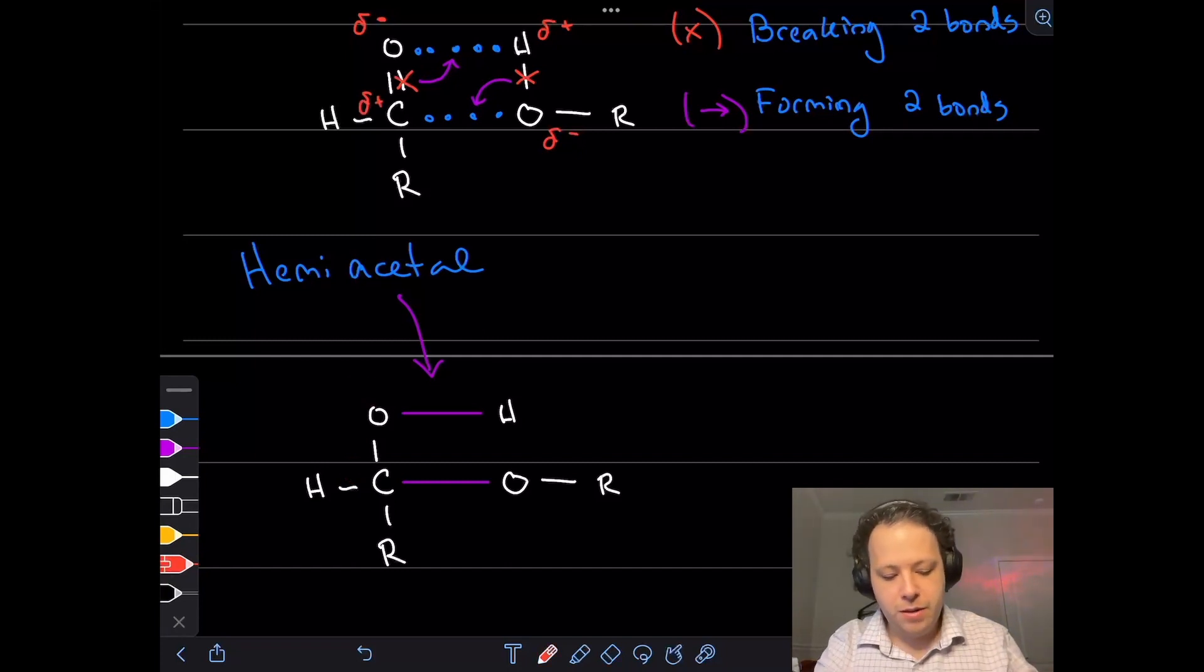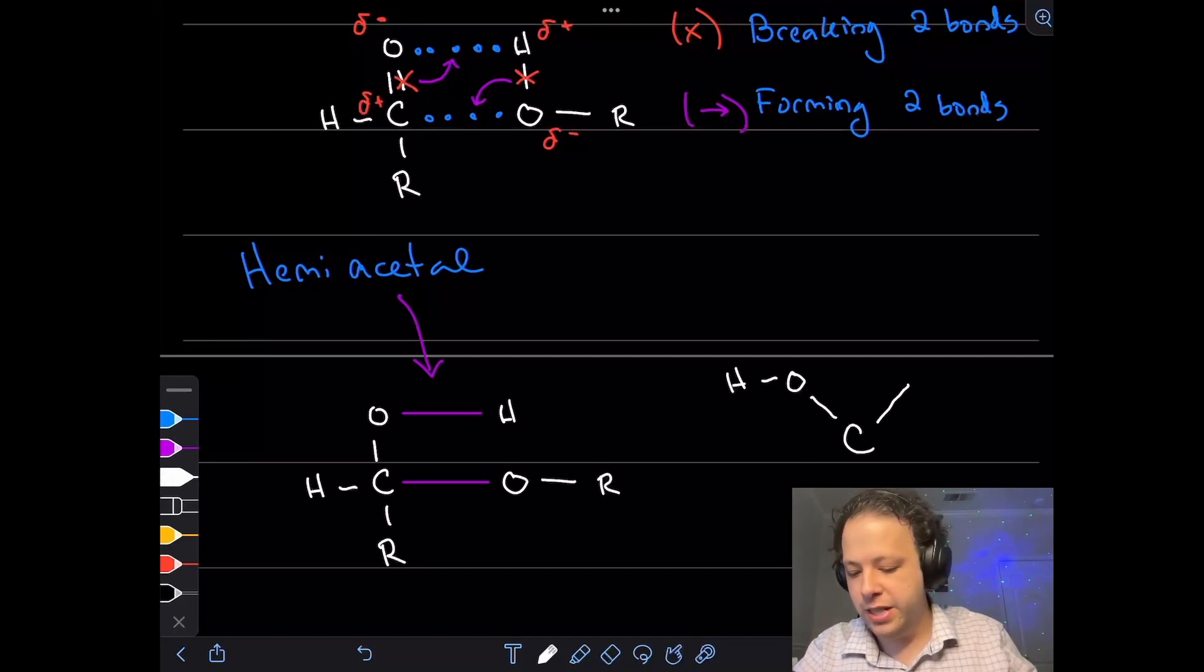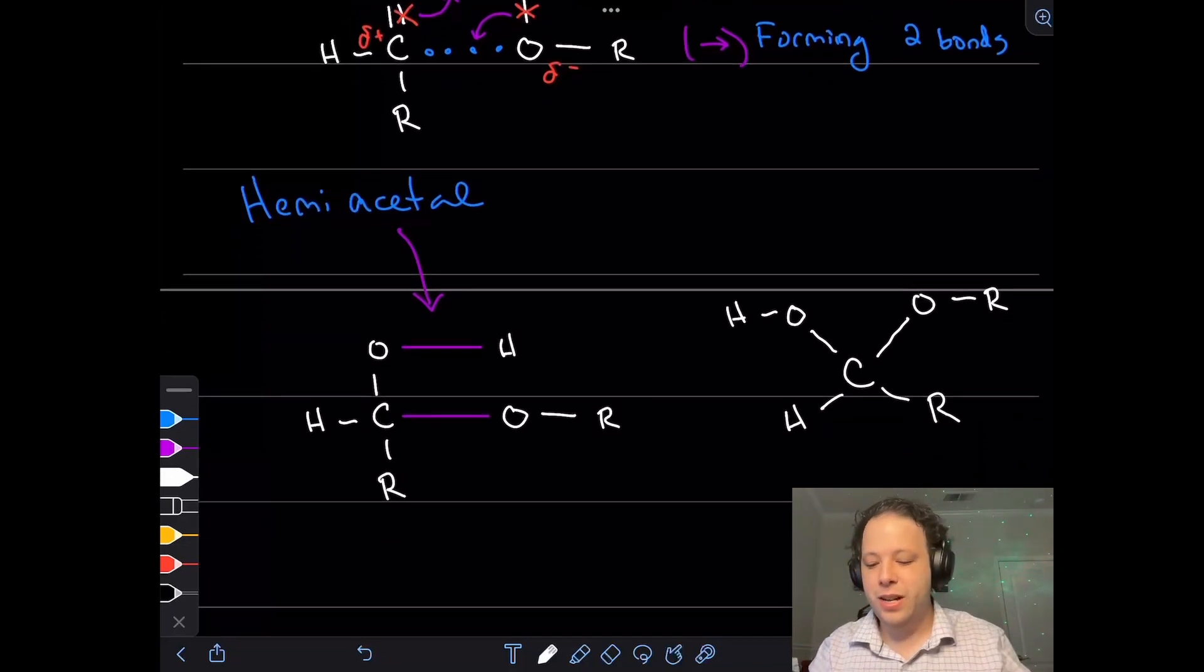So we have our hemiacetal structure that is here. We can get rid of these little delta pluses and minuses. Now it looks a little funny, but let's just redraw it for ourselves. We have a carbon with our OH on one side, and notice how we have two oxygens connected to the same carbon with a little hydrogen and then an R group. It has that signature little googly eyes look to it in its structure.